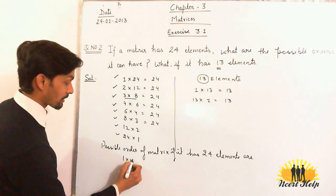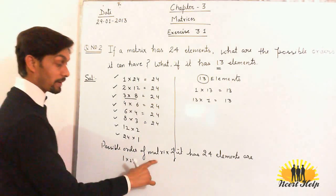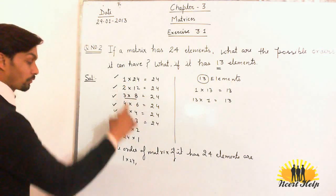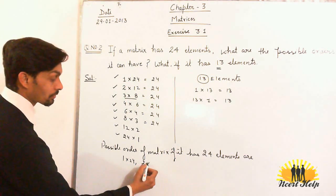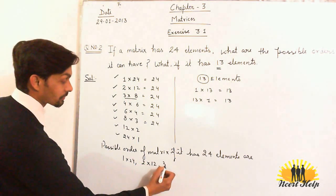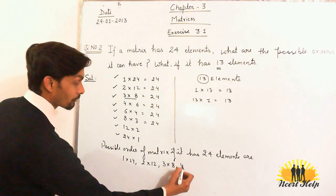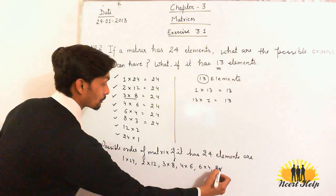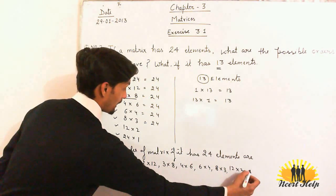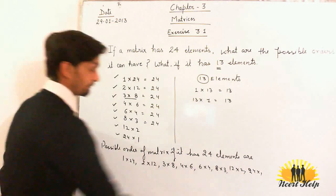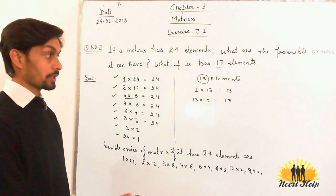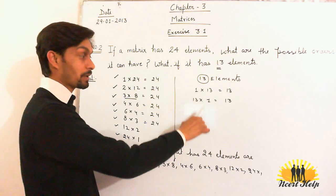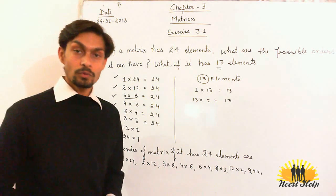The possible orders of a matrix if it has 24 elements are: 1 into 24, 2 into 12, 3 into 8, 4 into 6, 6 into 4, 8 into 3, 12 into 2, and 24 into 1. And the possible orders if it has 13 elements: there are 2 orders possible, 1 into 13 and 13 into 1.